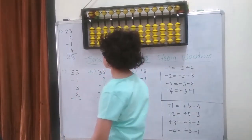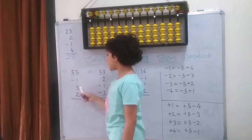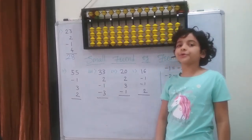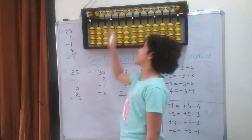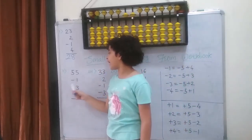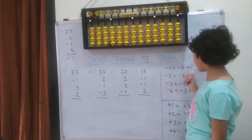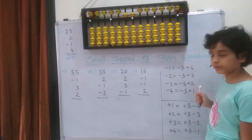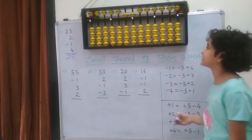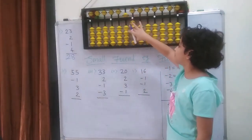Next question: 55 minus 1 plus 3 plus 2. So first on the abacus I am going to put 55. So 5 in the tens place and 5 in the ones place. Then I am going to minus 1. I cannot because I don't have enough beads. So I am going to use the subtraction formula, which is minus 1 equals to minus 5 plus 4. So minus 5 and plus 4: 1, 2, 3, 4.